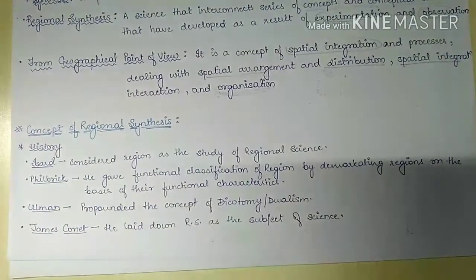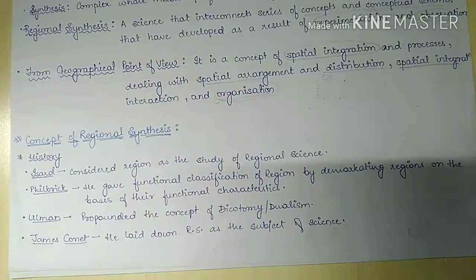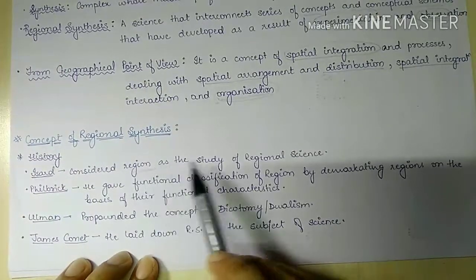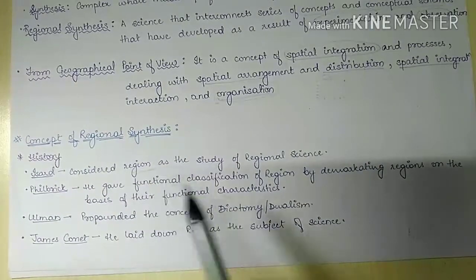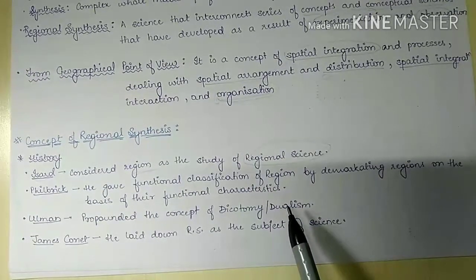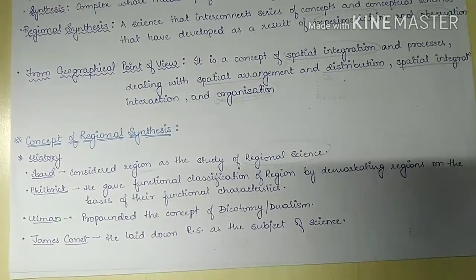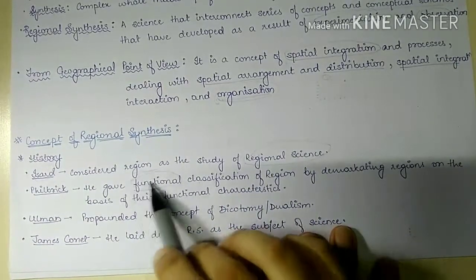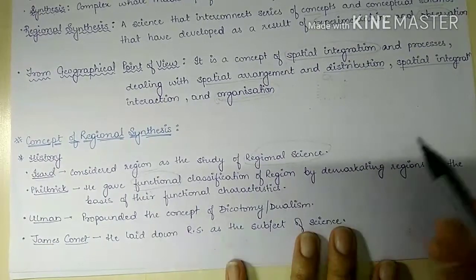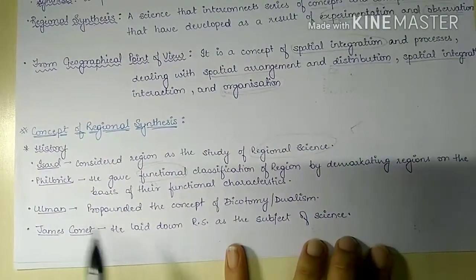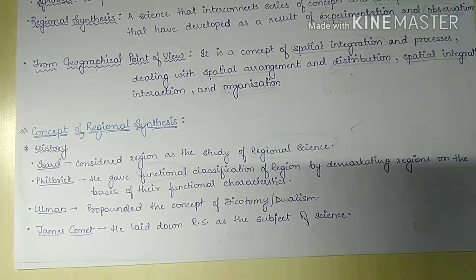Looking at the history of regional synthesis, this concept started with ISARD, who considered region as a study of regional science. Then we had Phil Brick, who gave the fundamental classification of regions — he demarcated regions according to their functional characteristics. Then we had Ullmann, who propounded the concept of dichotomy and dualism, which we will study in the next lecture.